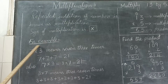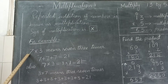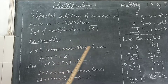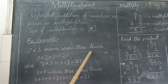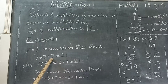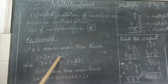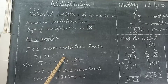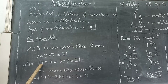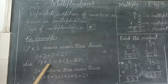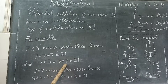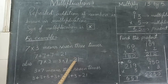For example here: seven multiplied by three means seven three times. Iska matlab hai aapne seven group of things ko three times plus kiya hai, jis se aapke paas answer aa jaata hai — twenty one. Also students remember: seven multiplied by three is equal to three multiplied by seven.